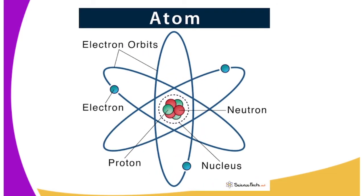So where do you think these charges are coming from? As you can see, we have an atom, and an atom is made up of electrons, protons, and neutrons. The electrons are the negatively charged particles and the protons consist of the positively charged particles. The neutrons are neutral — they don't have any charge. So where do the positive charges of an object come from? From the protons. And the negatively charged particles come from the electrons.